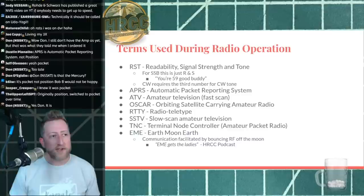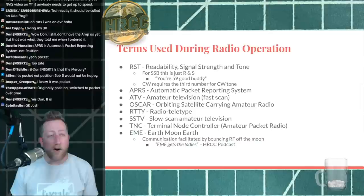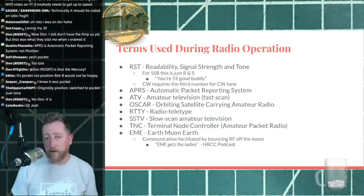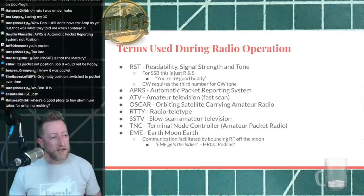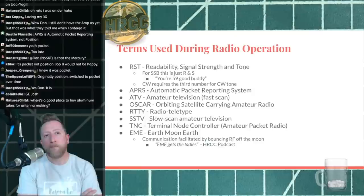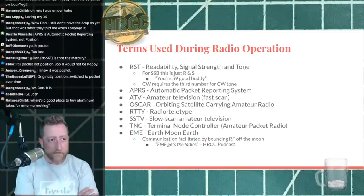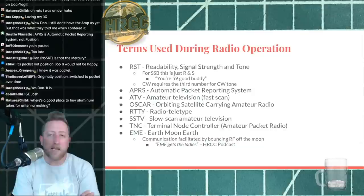ATV is amateur television — fast scan television, the corollary to slow scan television. OSCAR is orbiting satellite carrying amateur radio. RTTY is radio teletype — a mode of operation. SSTV is slow scan TV — used to send pictures over HF. It can take minutes for a high quality picture to go over HF. TNC is terminal node controller — this is amateur packet radio. I have a TNC in my home connected to a VHF radio. TNCs are used for packetized radio communication.